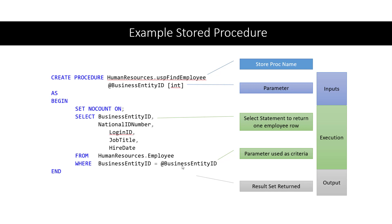When this SELECT statement runs, a result set is returned. Whatever calls the stored procedure will get back a result set of rows found from the SELECT — in this case, a single row of the employee with their Entity ID, ID number, login, job title, and hire date. In summary, the stored procedure has a name, there are inputs to the stored procedure, there is execution of the stored procedure, and ultimately there are results that are output from the stored procedure.